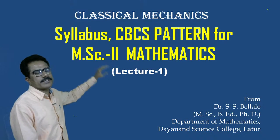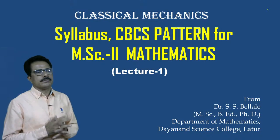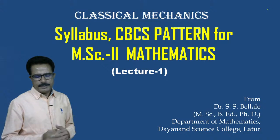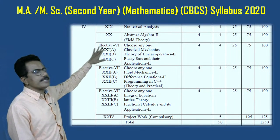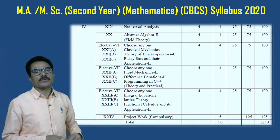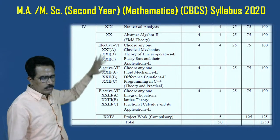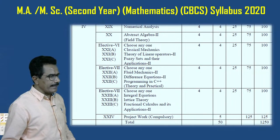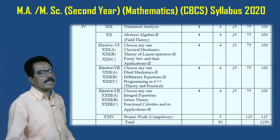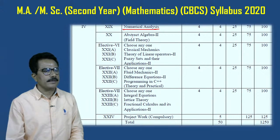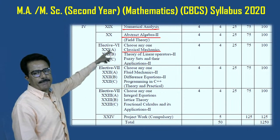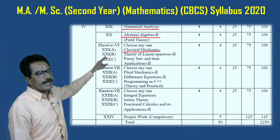In this first lecture, we shall discuss the syllabus based on classical mechanics. The syllabus for MBC second year mathematics is in the CBCS form from 2020. In the sixth semester, you have to prepare: first, numerical analysis; second, abstract algebra; then classical mechanics — out of these three papers, that is paper number 21A, 22B, 23C.